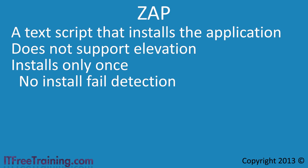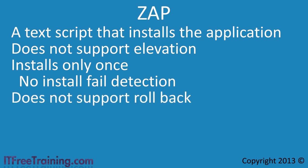The last limitation of zap files is that they do not support rollback. If you deploy software using an MSI file, you can at a later date remove that software. If you use a zap file, you cannot configure Group Policy to remove the software at a later date. If the software has an uninstall function, you can manually use this to remove the software, but there is no automatic way of doing this using Group Policy.